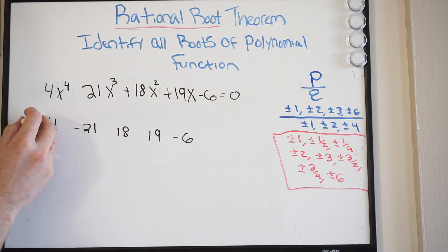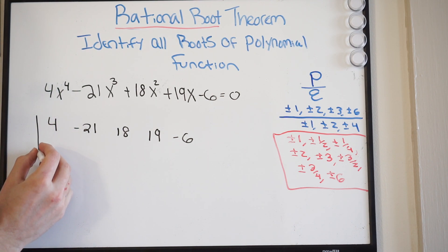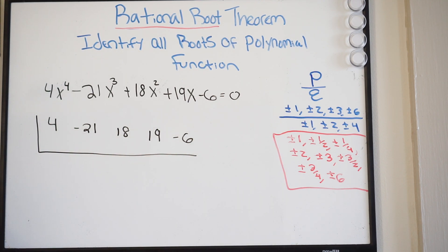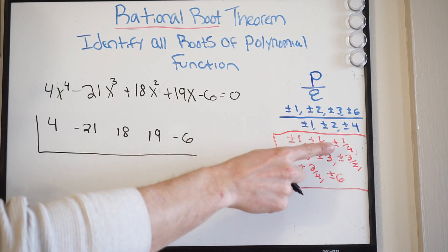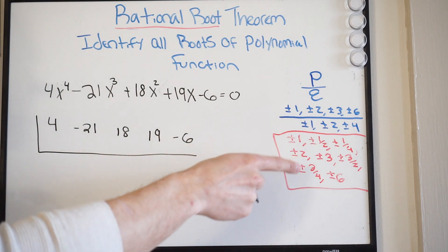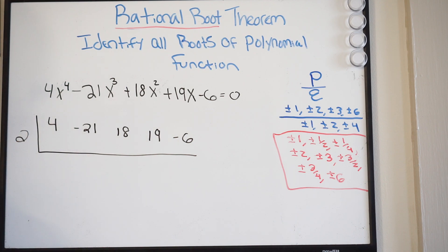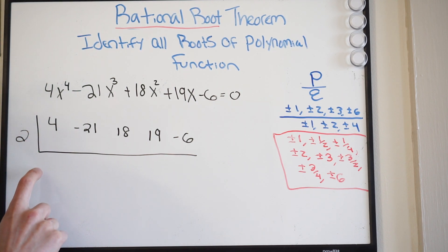And we're going to set up our synthetic division bar and pick one of these possible roots that would work for this function. I'm going to start out with 2 and see if 2 works. If it works out, our remainder at the end should be 0. If our remainder is 0, that tells us that that is indeed a root of this function. So let's go ahead and do this operation.